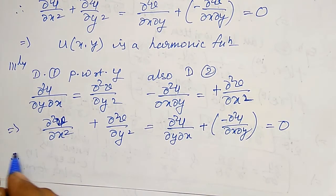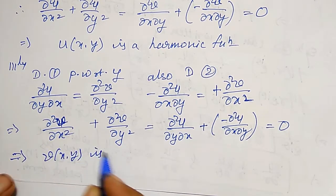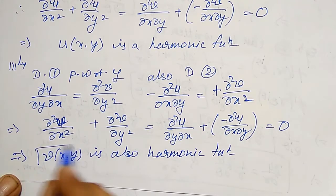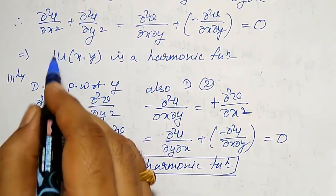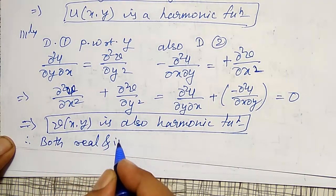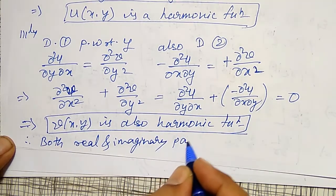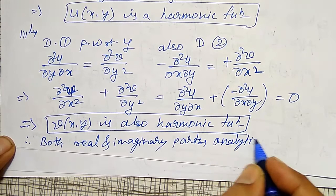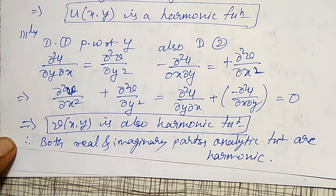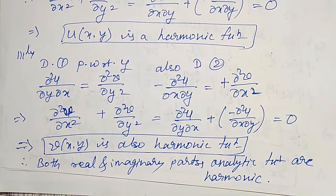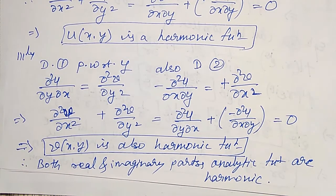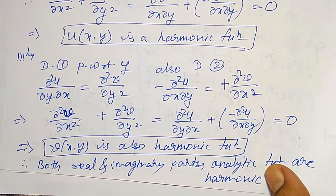Therefore, dou²v/dou x² + dou²v/dou y² = 0, which implies v(x,y) is also a harmonic function. Since v is the imaginary part and u is the real part of the analytic function, both real and imaginary parts of the analytic function are harmonic. Furthermore, u and v together are known as harmonic conjugates of each other. In the next video, I will derive the same result for harmonic functions in polar form.